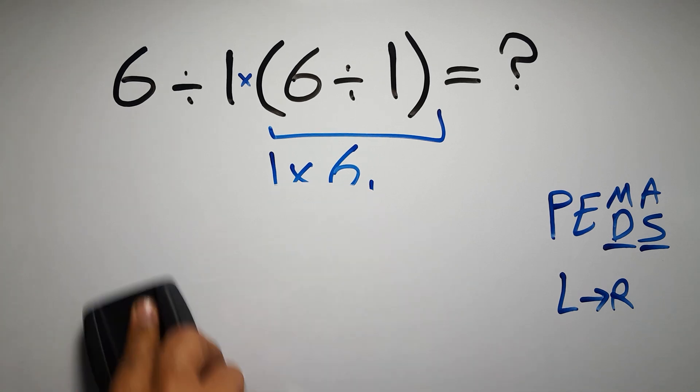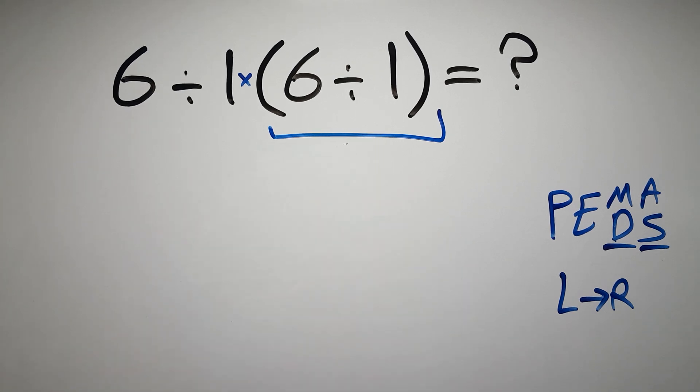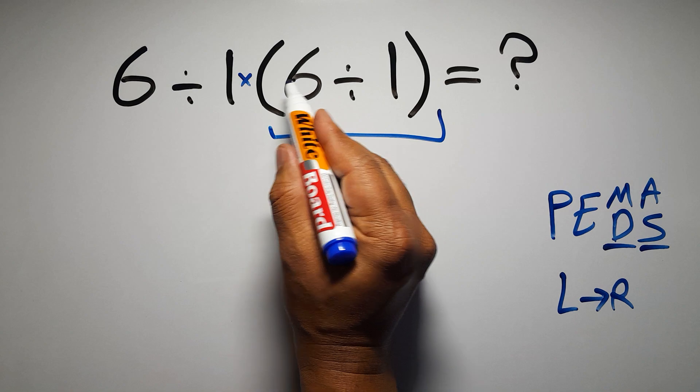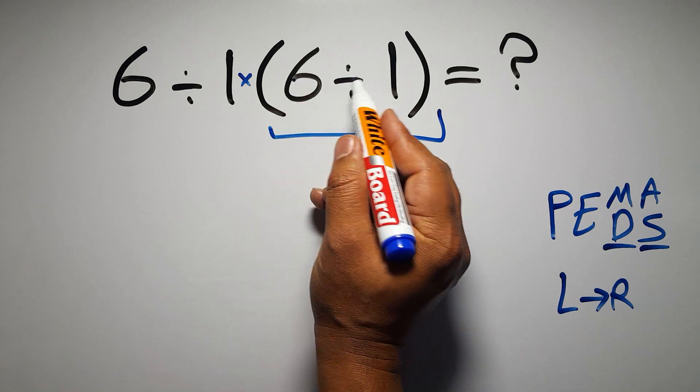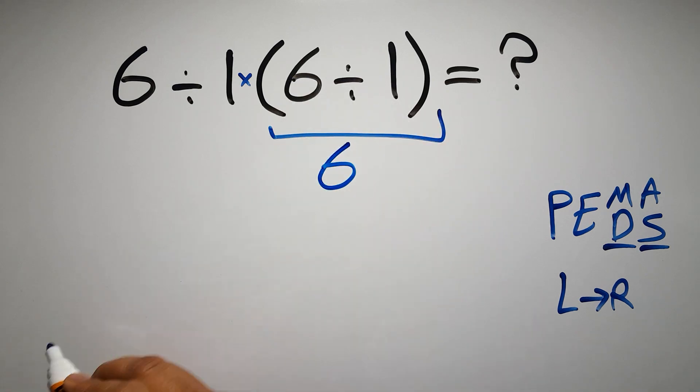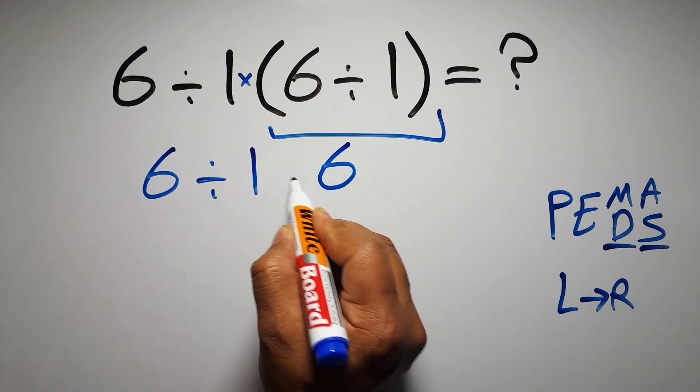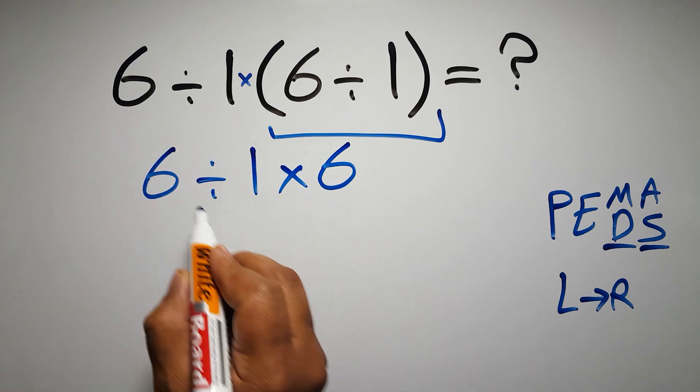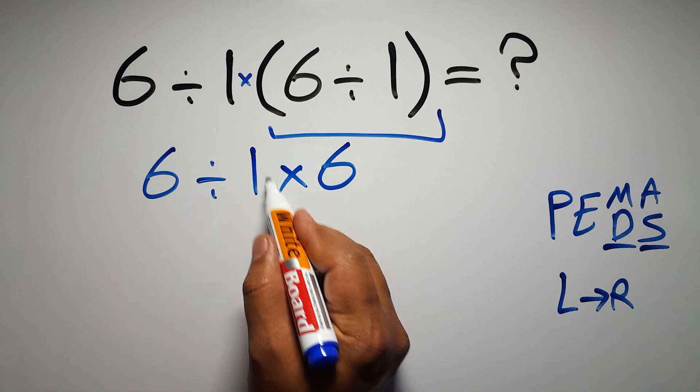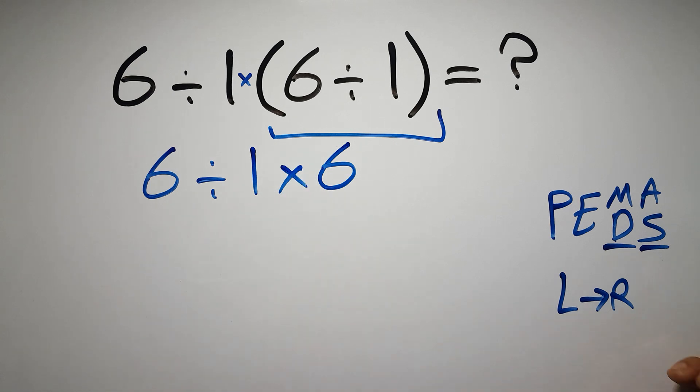So first these parentheses. Inside these parentheses we have 6 divided by 1 which equals 6. Okay, so we have 6 divided by 1 times 6. Now we have 1 division and 1 multiplication.